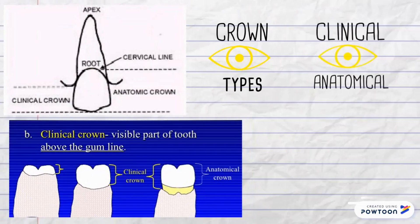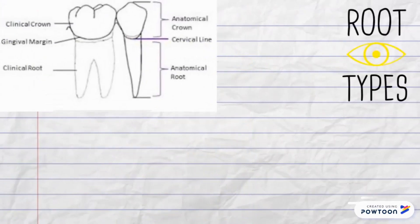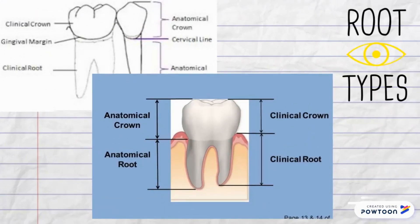The same goes with the roots. The clinical root is the part of the root surrounded by gingiva but not within the bone. The anatomical root is the root covered with cementum — the entire root, including the portion within the bones and surrounded by gingiva as well.